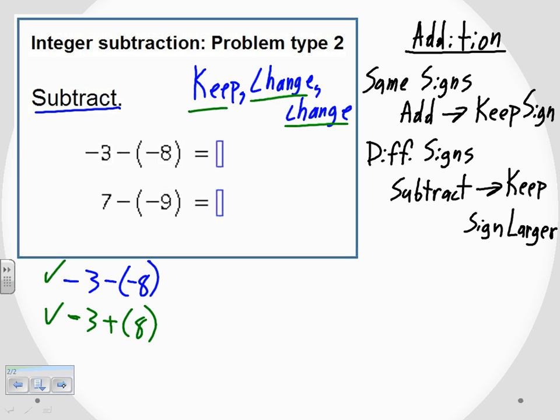I'm forgetting about signs at this point. 3 and 8, when I subtract, I get 5. But then the second part of that rule says keep the sign of the larger number. So the larger number between the 3 and the 8 is the 8, and the 8 is positive, so my answer is positive.